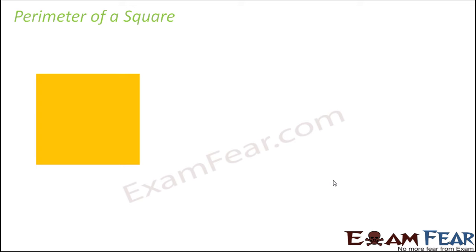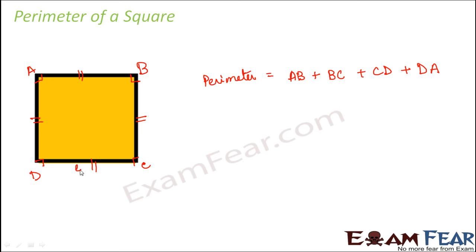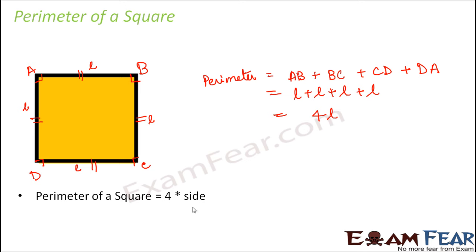Now let us look at other figures as well — for example, a square. The property of a square is that all sides are equal in length and each angle is 90 degrees. The perimeter of square ABCD is the sum of all four sides: AB plus BC plus CD plus DA. If each side has length L, this becomes L plus L plus L plus L, which is 4L. So the perimeter of a square is 4 multiplied by the length of each side.